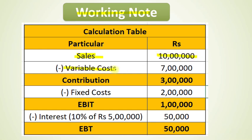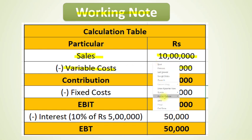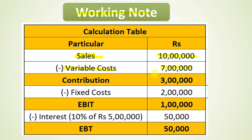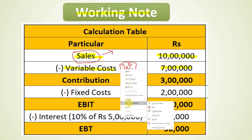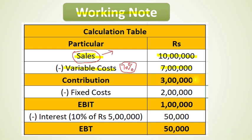Variable cost is deducted from sales to get contribution. Remember the formula: Sales minus variable cost equals contribution. Sales is 10 lakh rupees and variable cost is 7 lakh rupees, which is 70% of sales. So our contribution comes out to 3 lakh rupees.